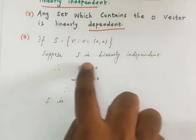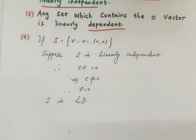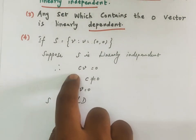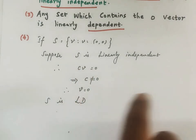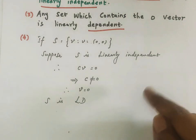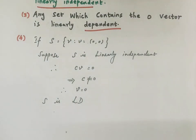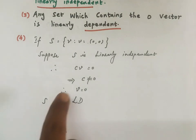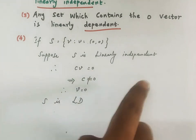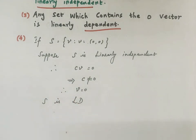For linear independence, there must exist a constant c such that c·v = 0 implies c = 0. For two vectors: c1·v1 + c2·v2 = 0 implies c1 = 0 and c2 = 0, then v1 and v2 are linearly independent. For a single vector: c·v = 0 implies c = 0 or v = 0.